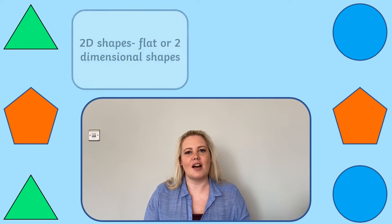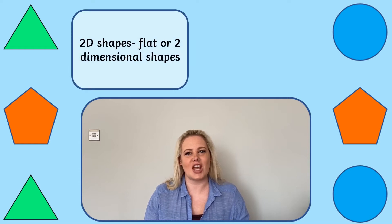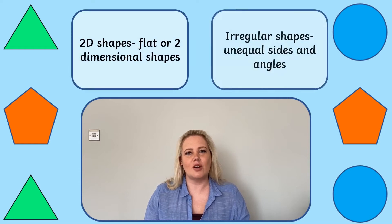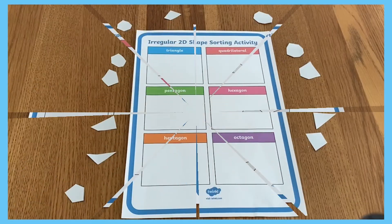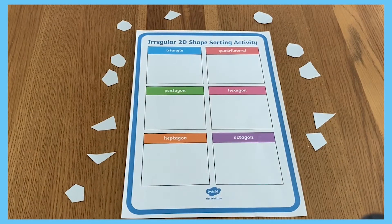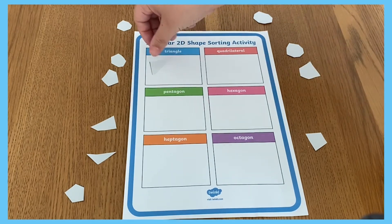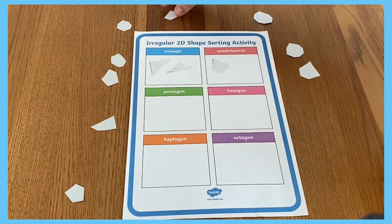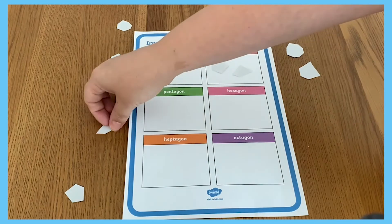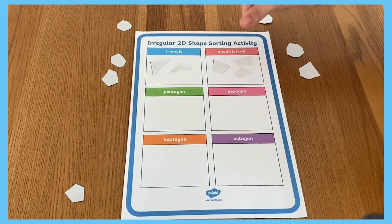These are flat or two-dimensional shapes which don't have equal sides or equal angles. To complete this engaging maths activity, learners need to cut out the irregular 2D shapes and stick them in the correct section on the grid. There are lots of irregular 2D shapes featured, such as quadrilaterals, pentagons and hexagons.